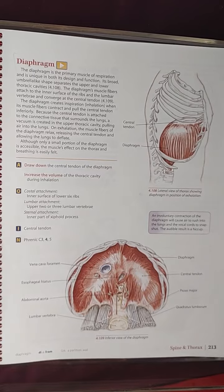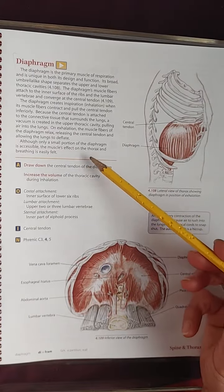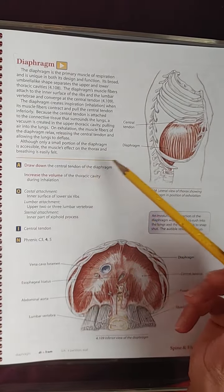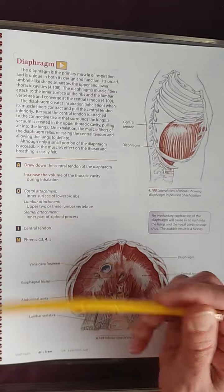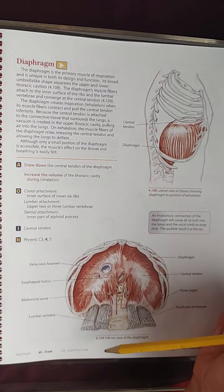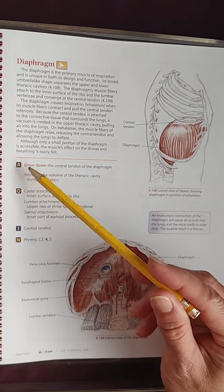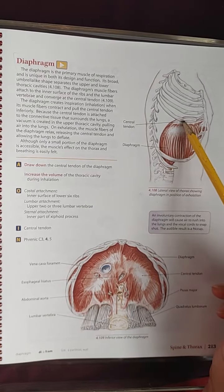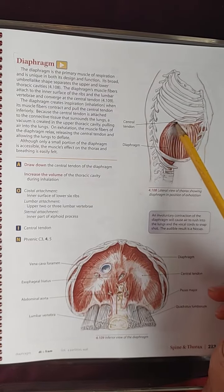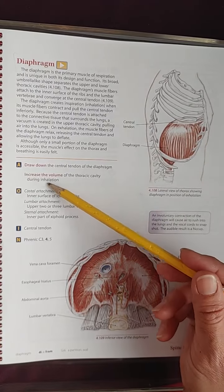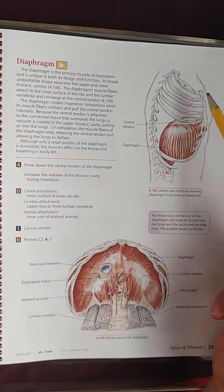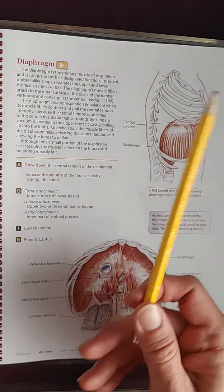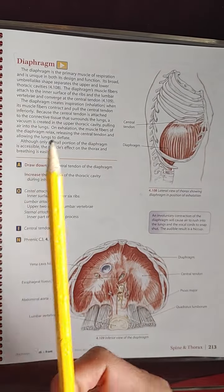Although only a small portion of the diaphragm is accessible, the muscle's effect on the thorax and breathing is easily felt. The action is to draw down the central tendon of the diaphragm, as seen in this image, increasing the volume of the thoracic cavity during inhalation.